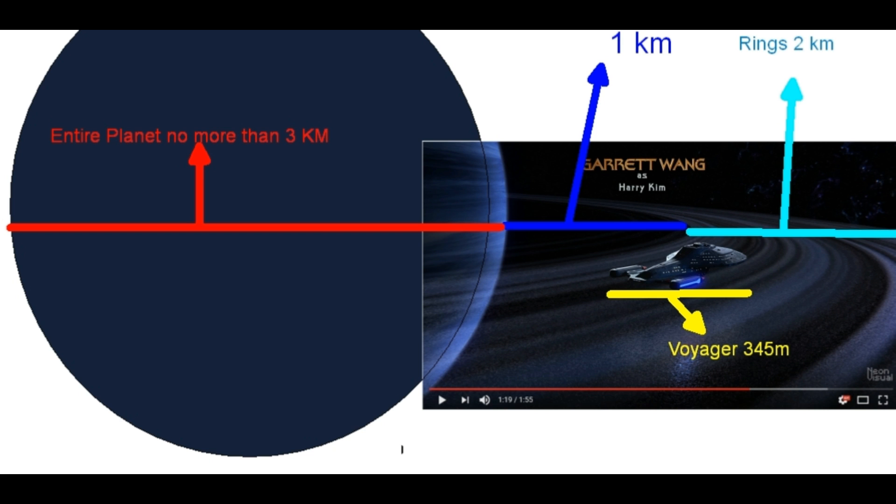And as we know, Federation spaceships usually don't go to warp within the solar system or near a planet. Well, there are some exceptions because Star Trek is not always correct, but in this case, we can assume that Voyager would be very small compared to Saturn rings.